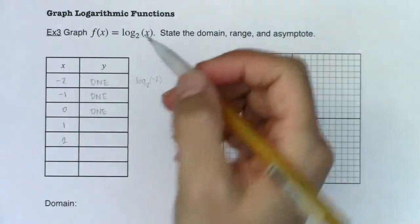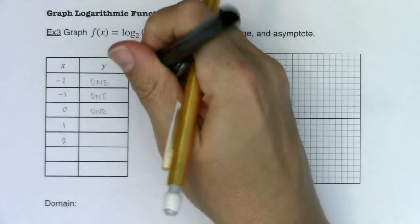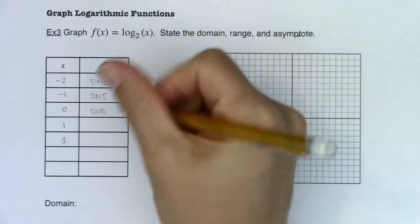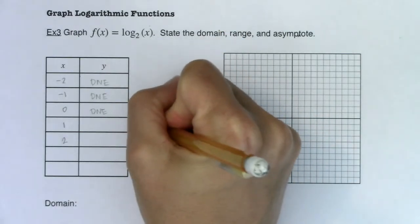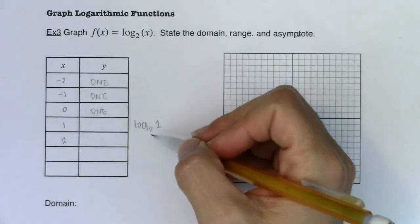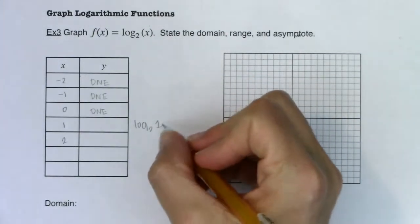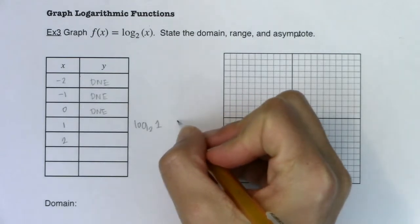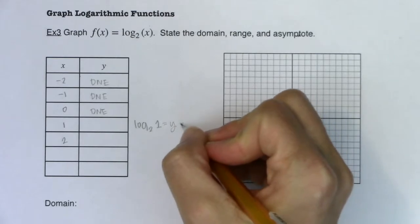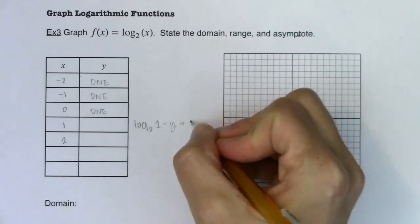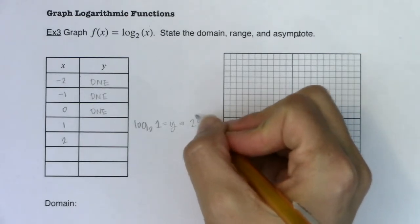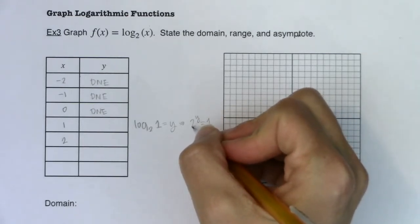Okay, now let's try log base 2 of 1. So I want you to think, and we've talked about this a couple of times. If I wanted to figure out what this number is, I could turn that into the equivalent exponential equation and see when is 2 to the y equal to zero, right? What exponent do I need on two to get to one?